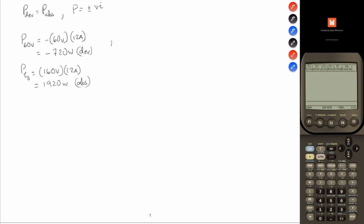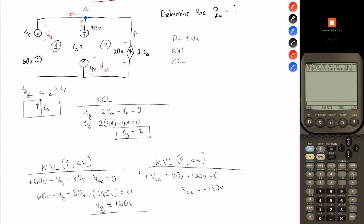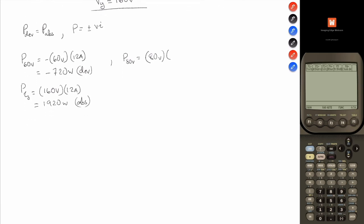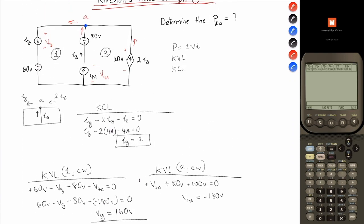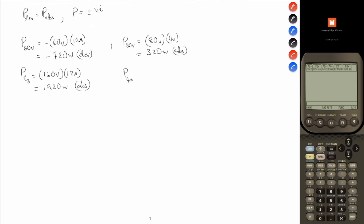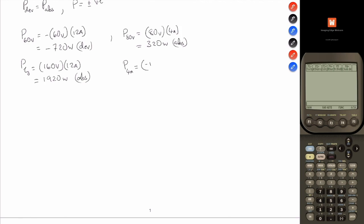Now the power developed or absorbed by the 80-volt source: the voltage is 80 volts, and in that branch we have 4 amps of current, so that equals 320 watts, and that is absorbed. Staying in that same branch, the power developed or absorbed by the 4-amp current source: negative 180 volts times 4 amps equals negative 720 watts, and that is developed.